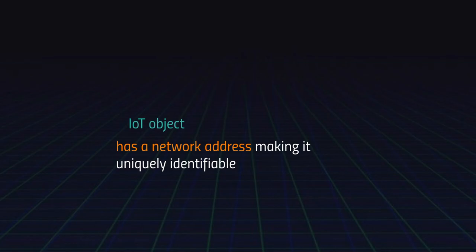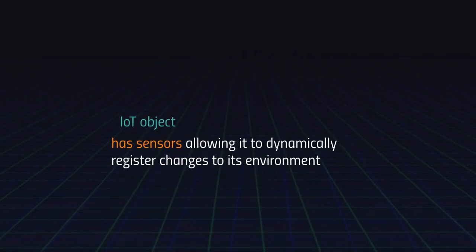So let's unpack this a little more. Each object has a network address making it uniquely identifiable. This means in practice that each and every Internet of Things object — whether an internet-connected fridge, toaster, or whatever — is uniquely identifiable on the global internet. It has the exact same internet address that your smartphone has, or that you yourself would have if you had your own server online. It has sensors allowing it to dynamically register changes to its environment.